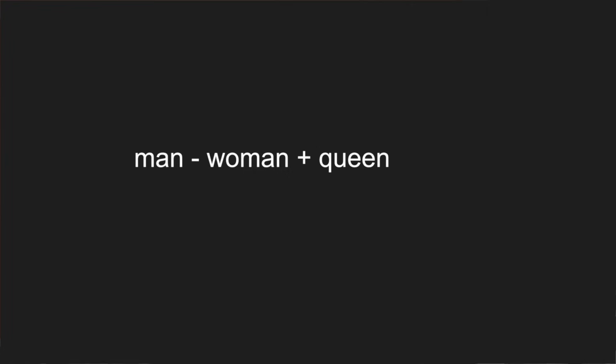In addition to closeness, we might also want there to be even more structure. For example, if I take the vector for man minus the vector for woman—subtracting each number from the corresponding number of the other vector—I want that to somehow represent the difference between male and female. Then if I add that vector to the vector for queen, I want it to give me something very close to the vector for king. I want the differences between vectors to also carry some meaning.